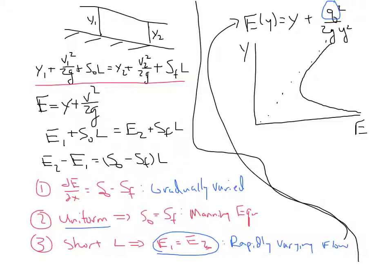Some of the key features we talked about today is the idea of a minimum energy that occurs at the critical point, E sub C, Y sub C. And then for a given energy greater than E sub C, say E1, we have two possible depths, Y1 and Y1 prime.